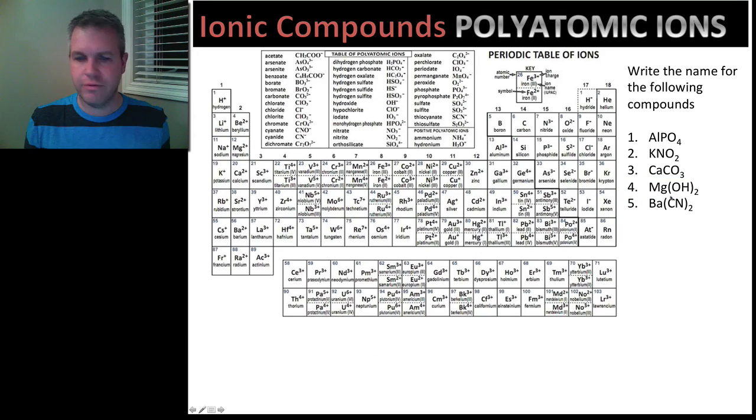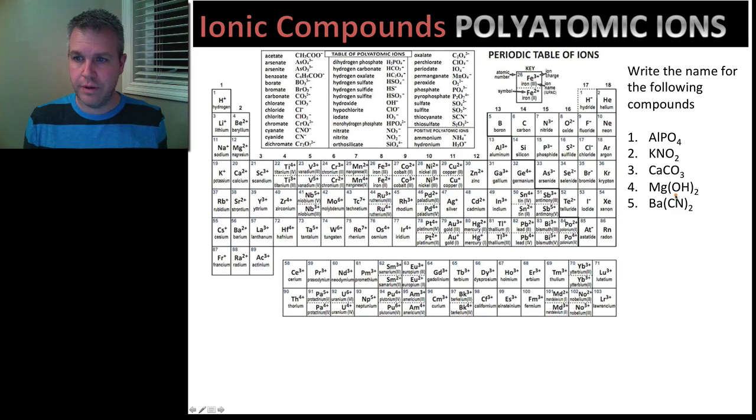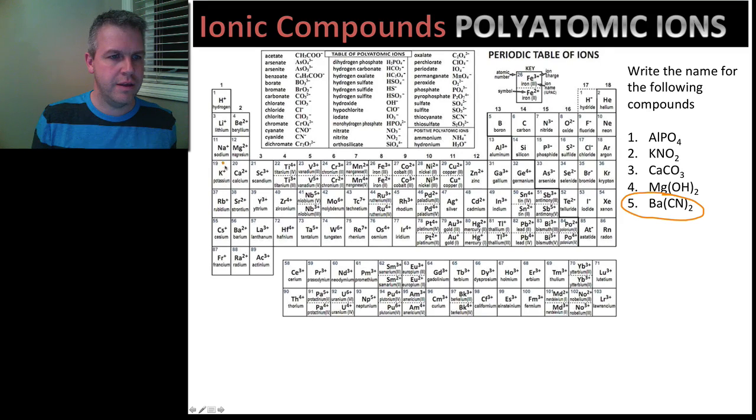And our last one here. Our last one here, Ba(CN)2. Okay, Ba is barium. And here we find CN. Barium cyanide.